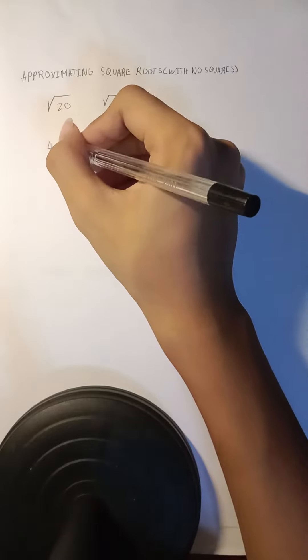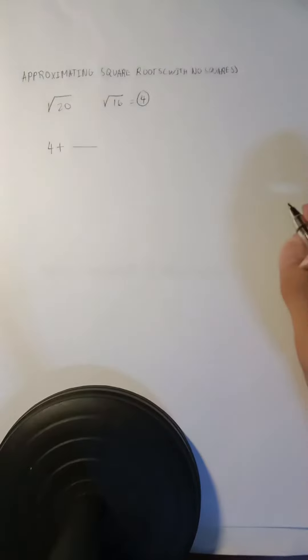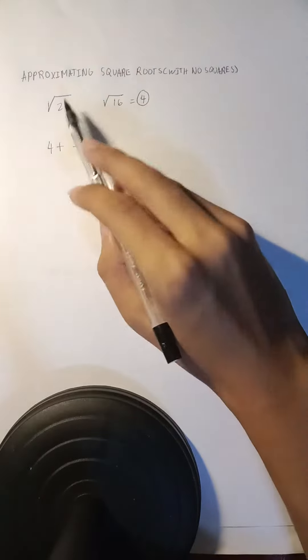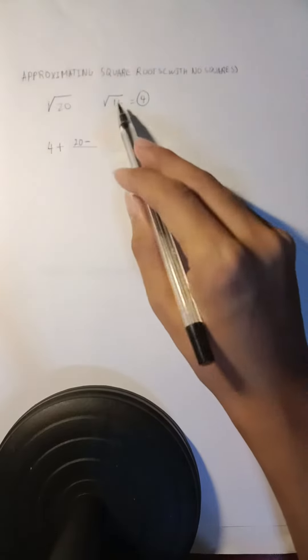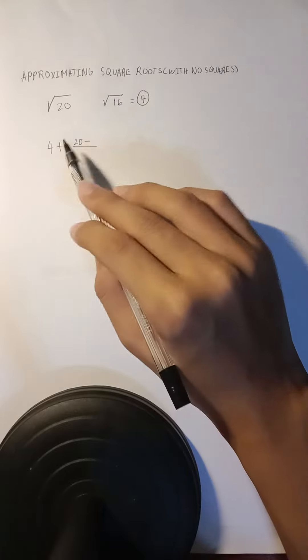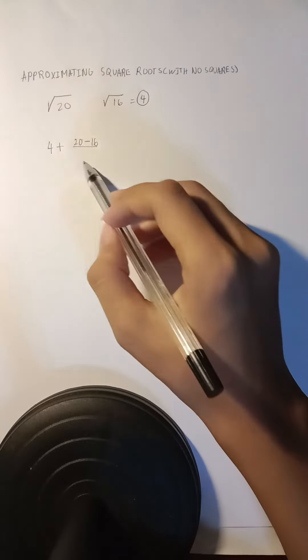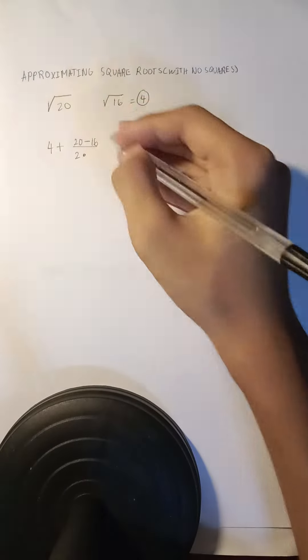Then what you want to do is put a plus sign, then a fraction sign, in which you will put the 20 here. Then you're gonna want to minus it to the square root that was used for us to get a perfect square, which is 16. Then at the bottom, you're gonna put 2 times the number of the perfect square that was used, which is 4.